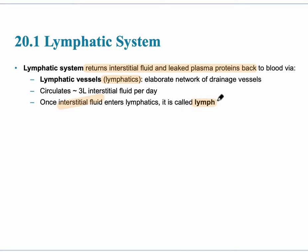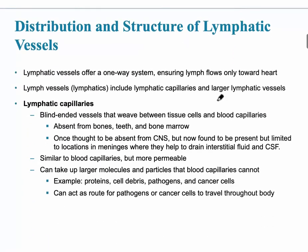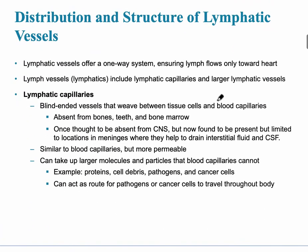Looking at the distribution and structure of the lymphatic vessels — as mentioned, they run alongside the veins, and they are a one-way system that ensures lymph flows only towards the heart, just like the veins.